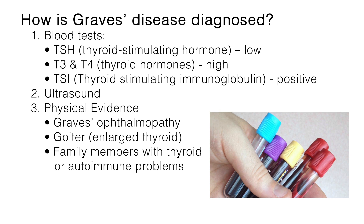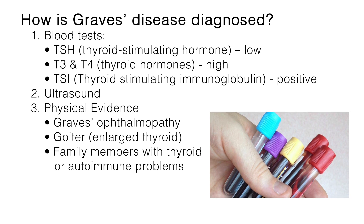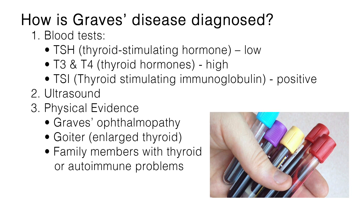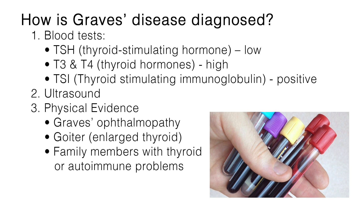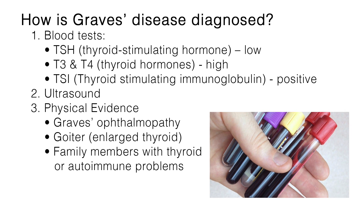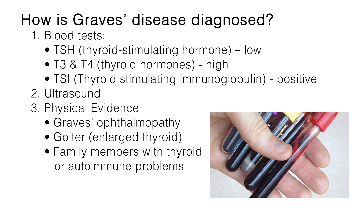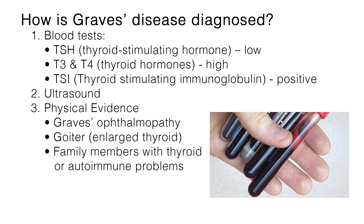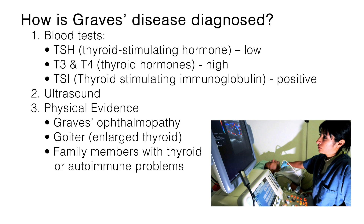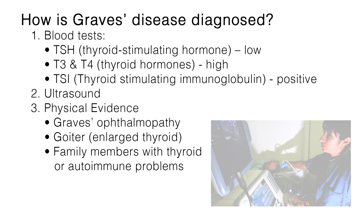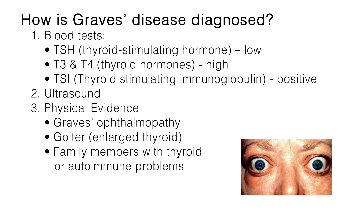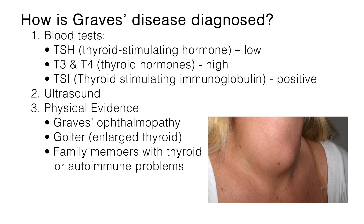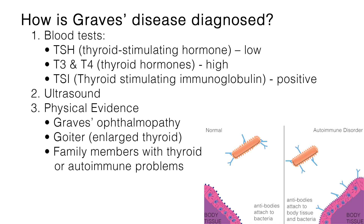There are several ways to diagnose Graves' disease. A blood test can be used to measure thyroid-stimulating hormone, or TSH, which will be low, and the amount of thyroid hormone, T3 or T4, which is usually elevated. Thyroid-stimulating immunoglobulin, or TSI, is also tested to verify an obscure diagnosis — it is an autoantibody that mimics TSH by stimulating the thyroid cells to secrete extra hormone and would be positive. An ultrasound can be done to define the size and condition of the thyroid gland. Evidence that the hyperthyroidism is caused by Graves' disease would be seen as the disease-specific Graves' ophthalmopathy, a goiter, the enlarged thyroid, and family members with thyroid or autoimmune problems.